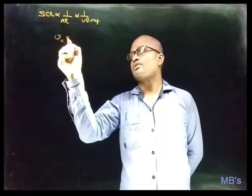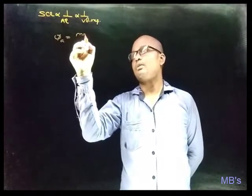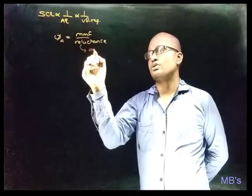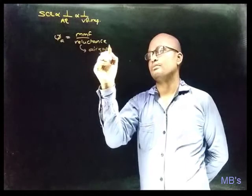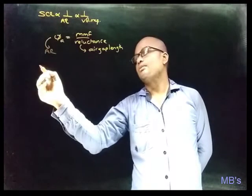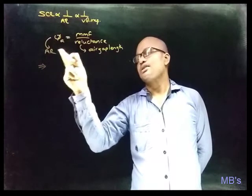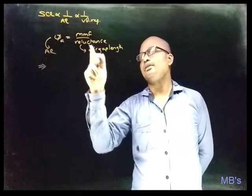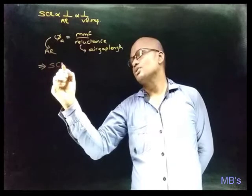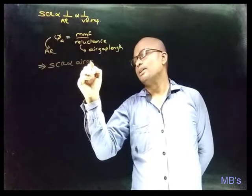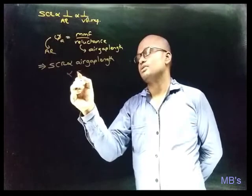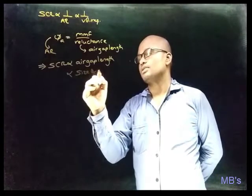Armature flux φA equals MMF times reluctance, and reluctance is directly proportional to air gap length. Since φA is directly proportional to armature reaction, and armature reaction is inversely proportional to air gap length, it follows that SCR is directly proportional to air gap length.